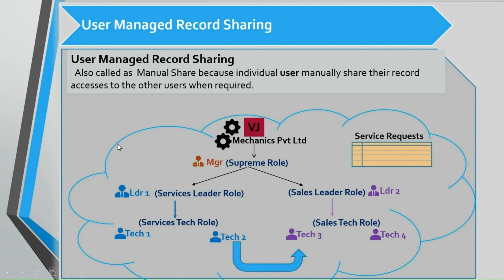For more details on OWD, role hierarchy, and sharing rules, please go through my earlier video. In this scenario we need to use user managed sharing technique, because he wants to share only one of his records. He can go to that record and manually share it to tech 3. Note that he can share to individual users, certain roles, or public groups.